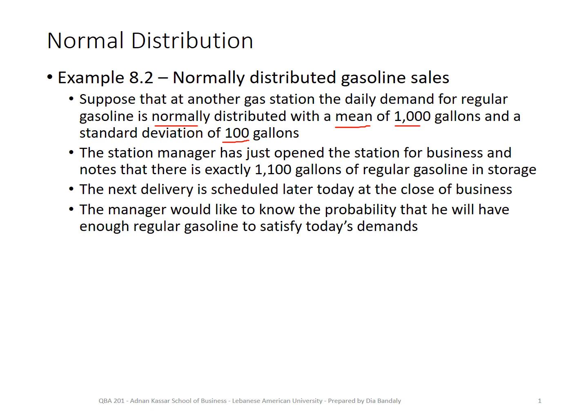So μ is 1000 and σ is 100. We can write that the daily demand D is normally distributed with these two parameters — mean and standard deviation. Now the manager just realized that they have 1100 gallons of gas in storage. This is what they can use to sell during the day.